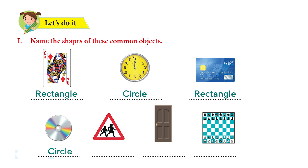Is the sign board a rectangle? No. Is it a circle? No, that's a triangle. You're correct. And how about this door? It's a rectangle. And the last one is a chess board. What shape is it? It is a square. Very good.